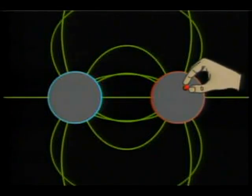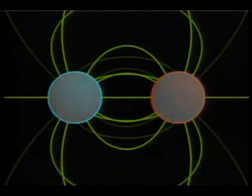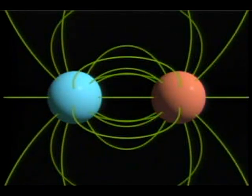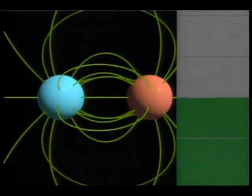But inside, there's no field at all. And because there's an electric field between two oppositely charged pieces of metal, there's bound to be a difference in potential between them.